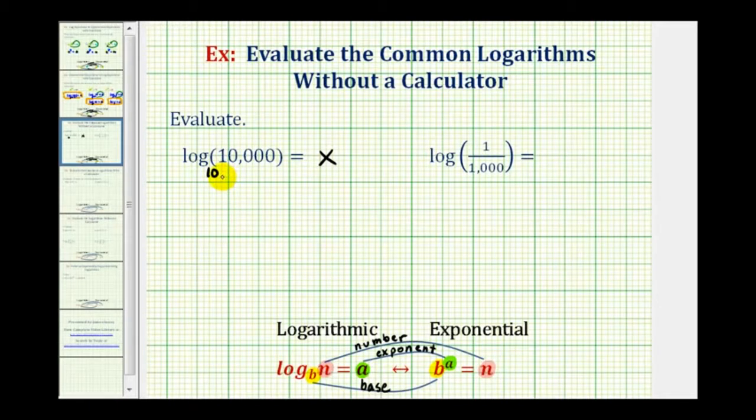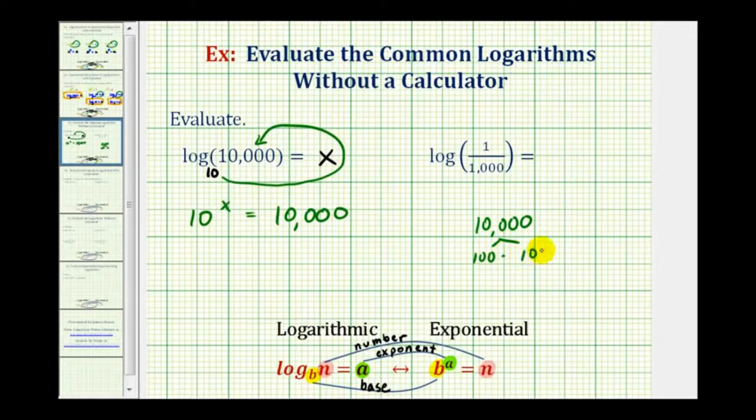Here we have 10 raised to the power of x equals 10,000. We can do this without a calculator because we can write 10,000 as 10 raised to some power. 10,000 equals 100 times 100, and 100 equals 10 times 10. So 10,000 equals 10 to the fourth. Therefore, 10^x = 10^4.